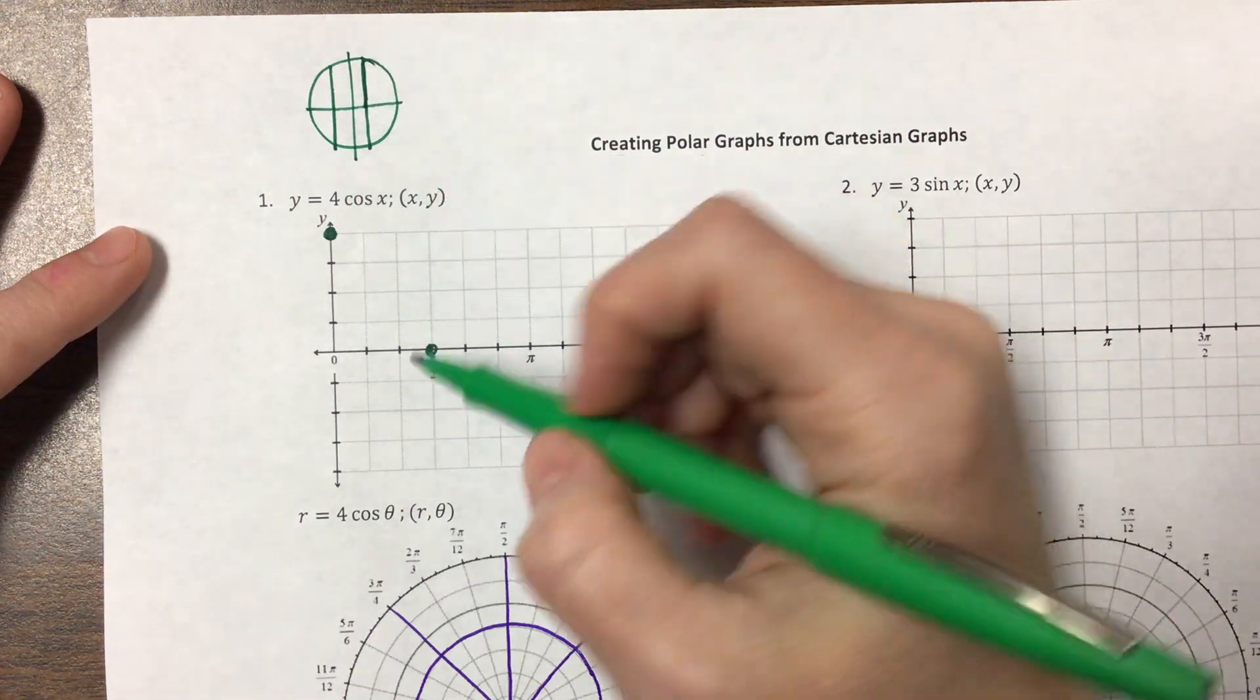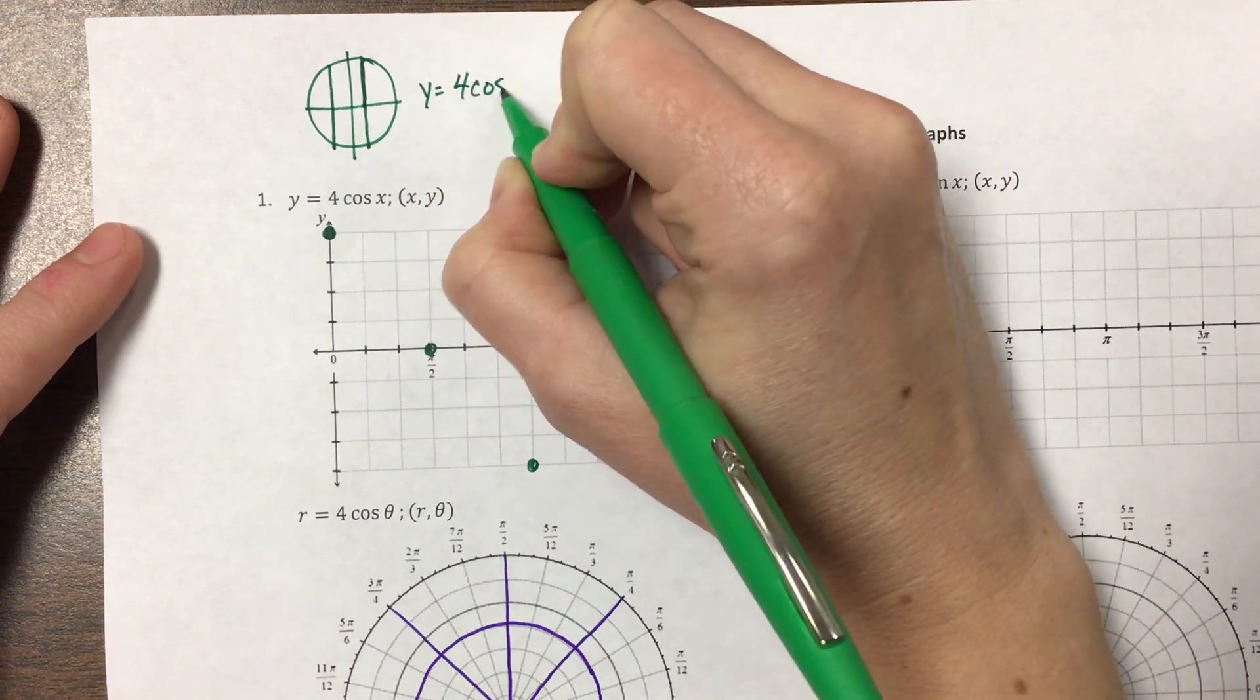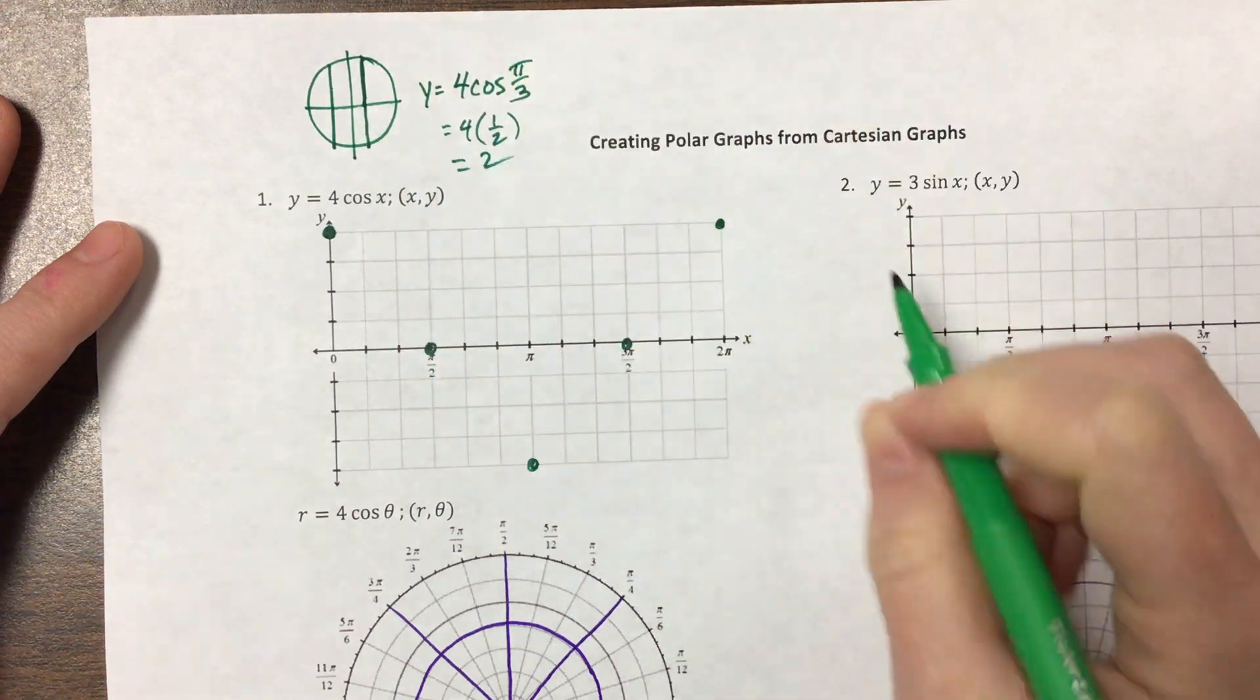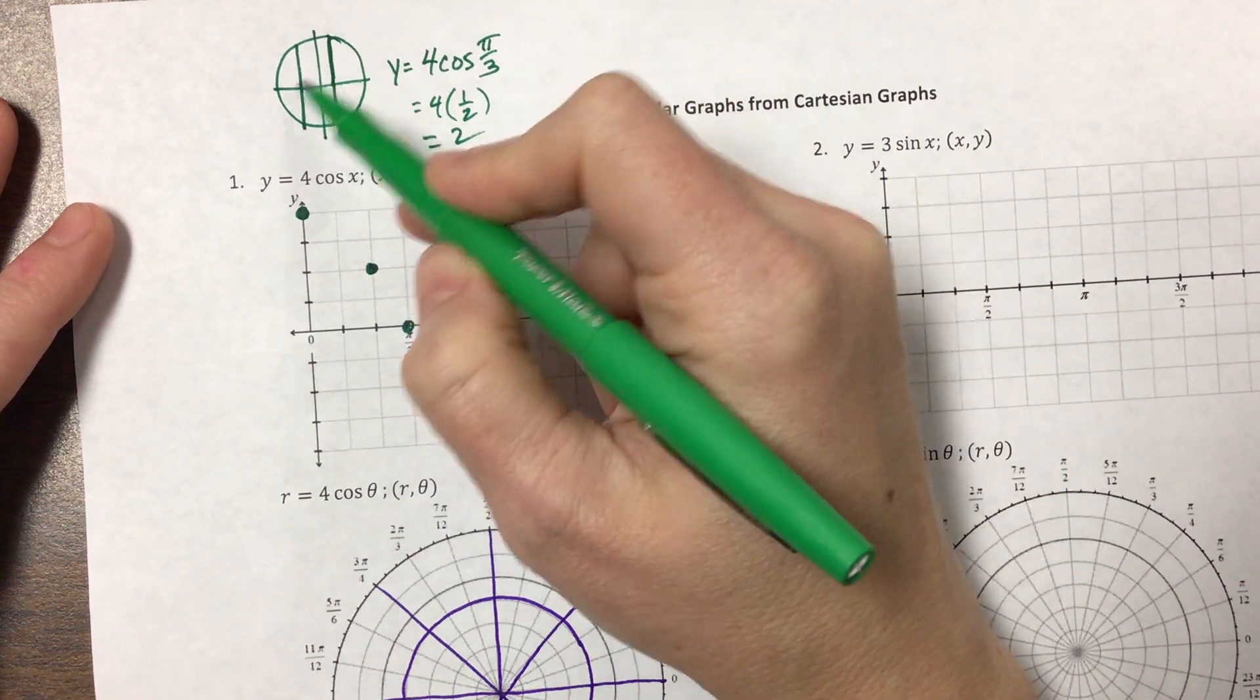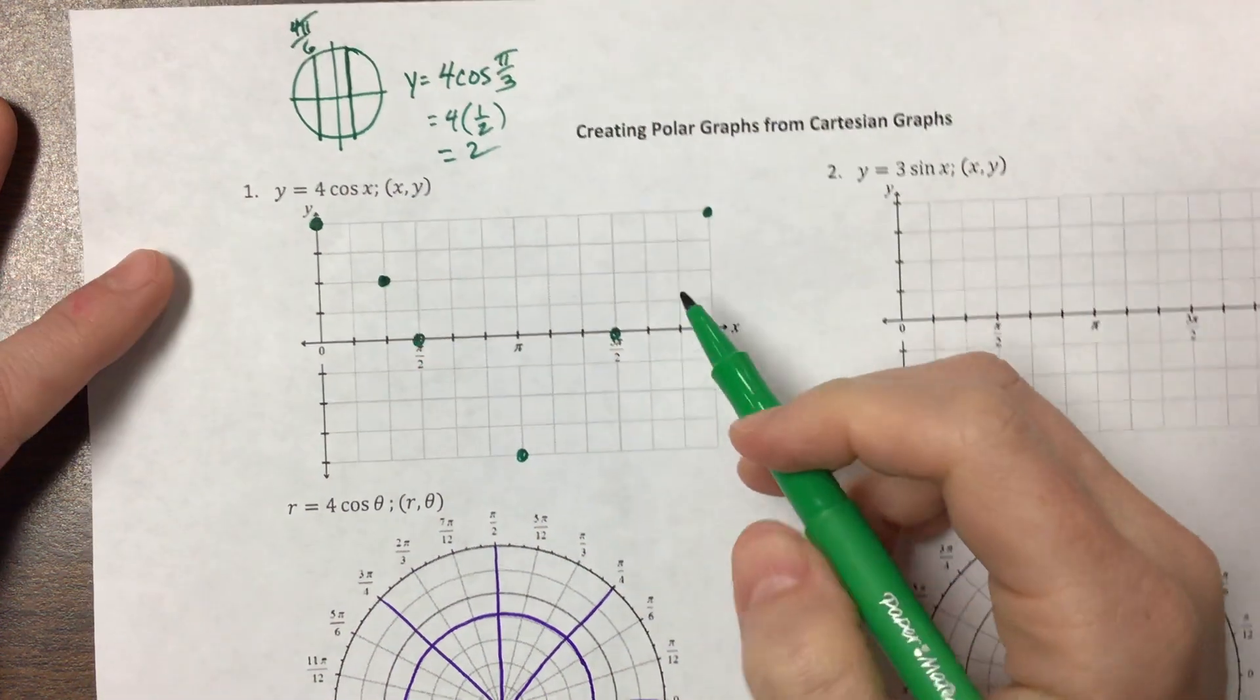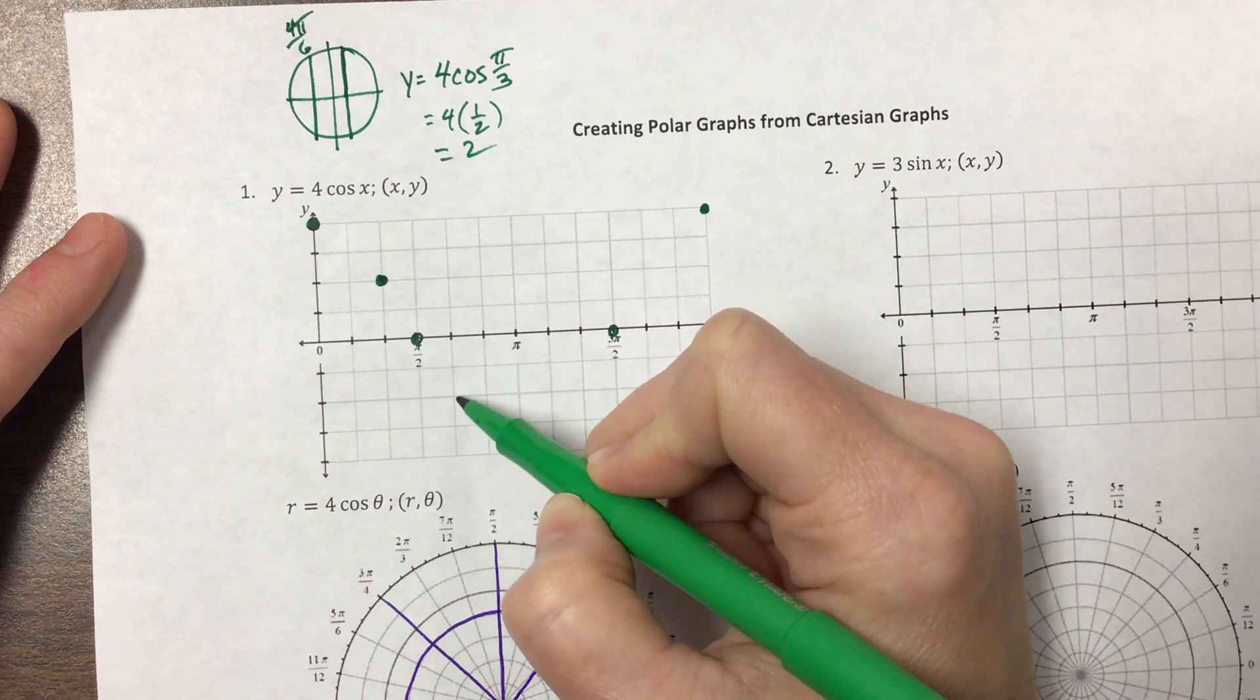This first one, π/3, is going to be here. I'm trying to find the y value when cosine is π/3. We remember that π/3 is 1/2, so this is 4 times 1/2, giving me a y value of 2. So here I'm at positive 2. And then at 2π/3, which is 4π/6, I'm at -1/2. So 4π/6, that's a -2.